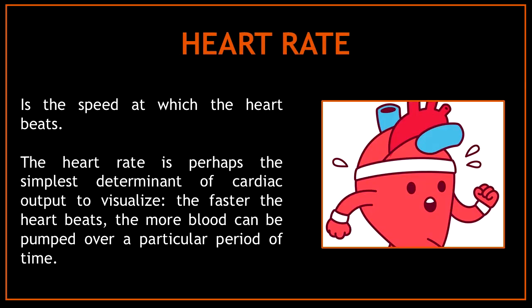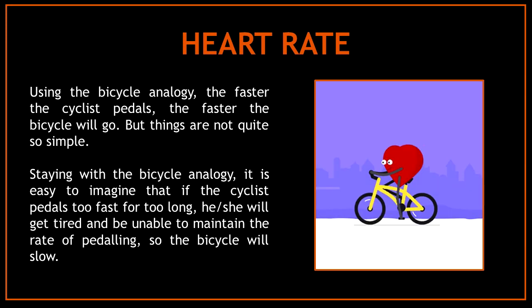The heart rate is the speed at which the heart beats. It is perhaps the simplest determinant of cardiac output to visualize: the faster the heart beats, the more blood can be pumped over a particular period of time. To understand the role of heart rate in cardiac output, let's use the bicycle analogy.